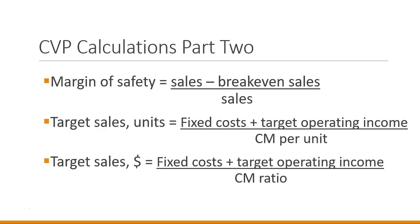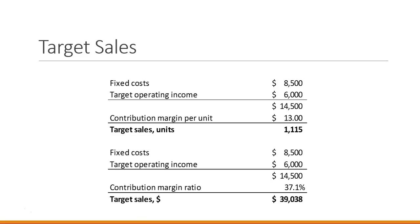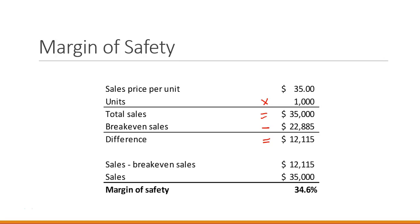Let's go back to the data set. Margin of safety: sales price of $35 times 1,000 units equals total sales of $35,000, minus breakeven sales we calculated, giving a difference of $12,115. That difference divided by total sales of $35,000 equals a margin of safety of 34.6%. This tells us that at our planned sales level we are 34.6% above our breakeven level — a nice cushion. We could have a 34.6% drop in sales and still not be losing money.